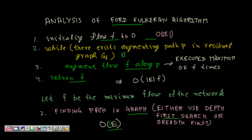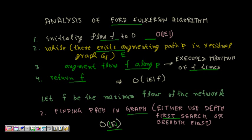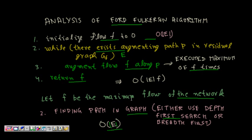So we are done with this while loop, how much time it will take to find the path. Then augment flow F along P, so this can be executed maximum of F times. So in the while loop the condition can be executed in order of |E| time and this while loop can be executed maximum of |F| times where F is the maximum value of the flow in the network.